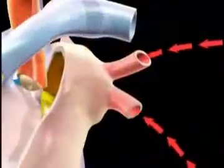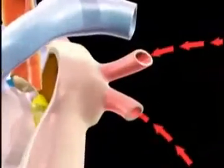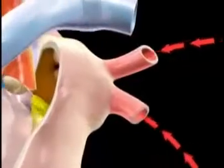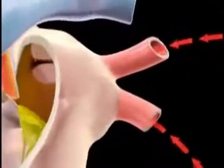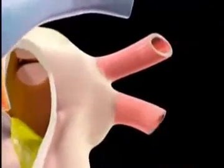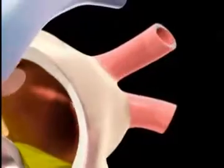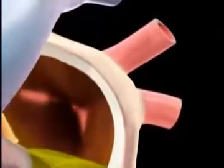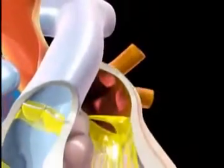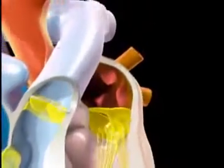After passing through the circulation of the lungs, the blood, having been recharged with oxygen and having rid itself of carbon dioxide, is returned through the pulmonary veins to the left atrium. The left atrium, too, contracts, forwarding blood into the left ventricle in order to fill it before it contracts.